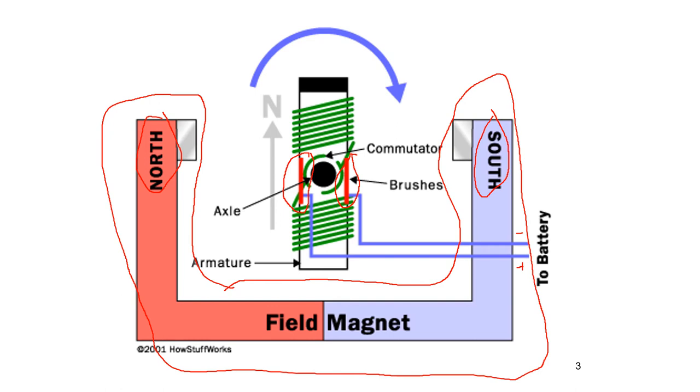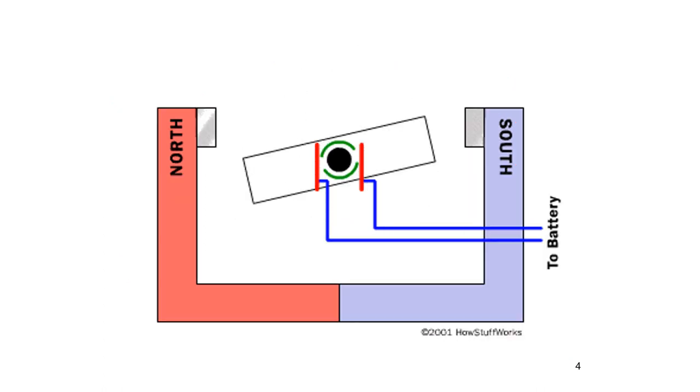So as this spins, the commutator is going to switch sides. As it switches sides from positive to negative, the electromagnet the coil creates is going to switch from north to south. And so at this point, it's attracted. It's going to go that way. But as soon as it gets here, we're going to switch sides. It's going to become south and so get repelled by this side.